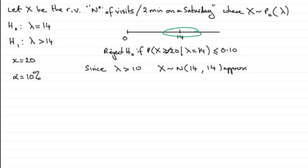So we need to work out what this probability is going to turn out to be. Is it going to turn out to be less than or equal to 0.10? So we need to work out then from the normal distribution here, what the probability is of X being greater than or equal to 20. Given that X is distributed with that normal distribution. Let's just say X is distributed normally. 14, 14 approximately.